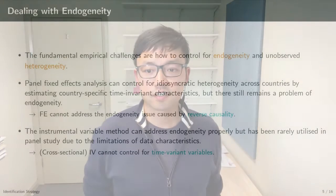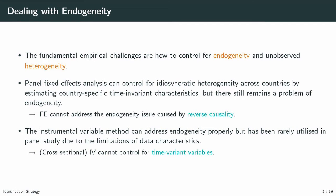The fundamental empirical challenges when trying to identify a relationship between institutions and economic outcomes are endogeneity and unobserved heterogeneity. I summarized the identification strategies of key papers in my paper. Panel fixed effects model can control not only the impact of observables, but also the impact of time-invariant unobservables. But there still remains an endogeneity problem caused by reverse causality. Instrumental variable estimation can address endogeneity properly but has been rarely utilized in a panel study, since most instruments are geographical, cultural, or historical factors that are constant over time.